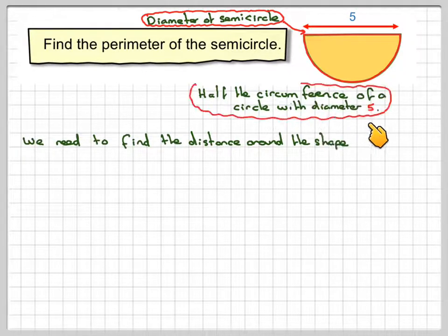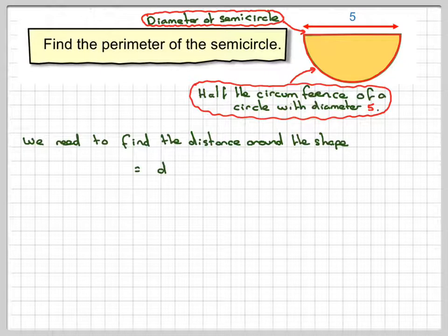So that is going to be the diameter plus this distance, which is going to be pi times d, which is the circumference, and then we have to divide that by two because we've got a semicircle.